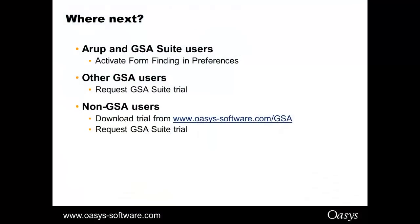Where next? If you want to have a go at something similar yourself, if you're an Arup or an existing GSA Suite user just make sure you activate the form finding in the GSA preferences. If you're a GSA user of a different GSA type speak to myself or Nick or all my colleagues and we can organize a trial for you for the form finding. If you're not using GSA at all at the moment download GSA from the website and that will give you everything apart from the fabric and form finding and then speak to one of us and we can organize the trial license for you.